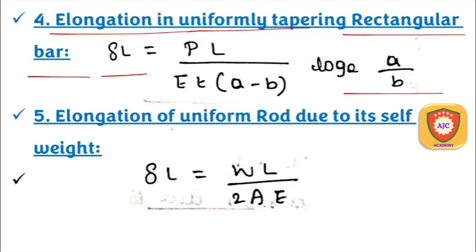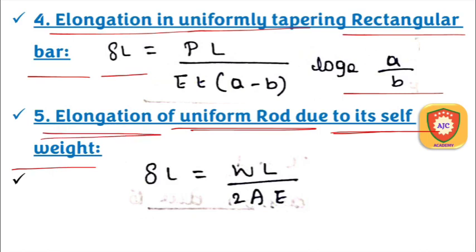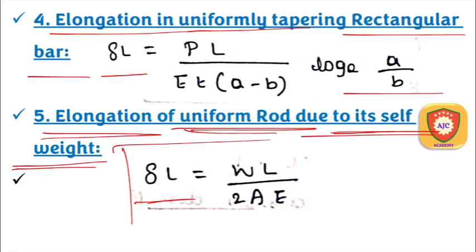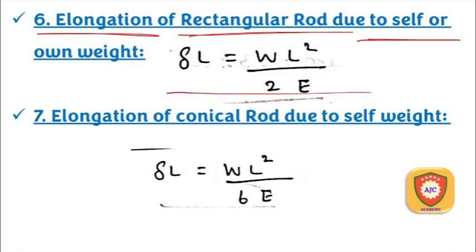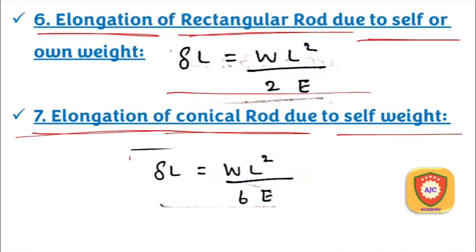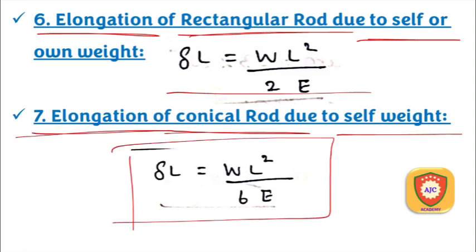For a uniform rod due to self-weight, δl = WL / (2AE). For a rectangular rod due to self-weight or own weight, δl = WL / (2E). For a conical rod due to self-weight, δl = WL / (6E). So these are the elongation formulas for uniform, rectangular, and conical rods under their own weight.